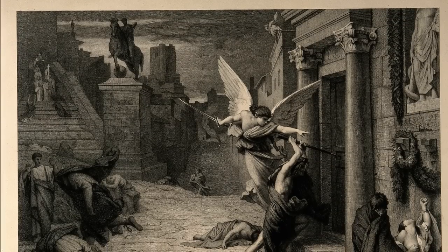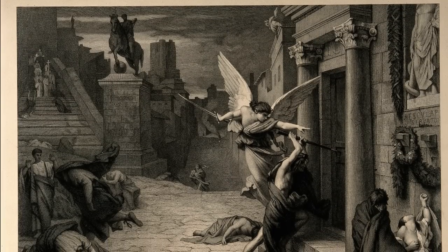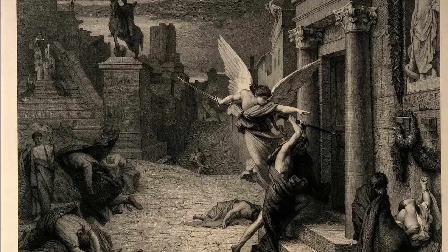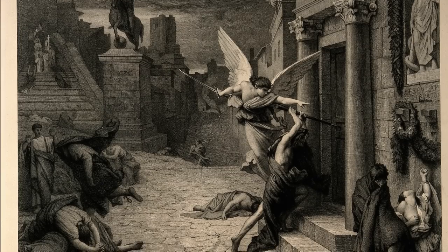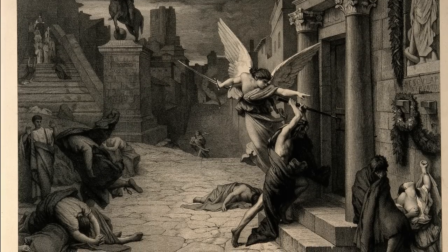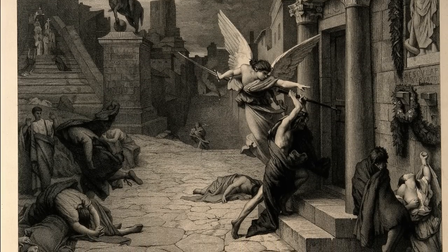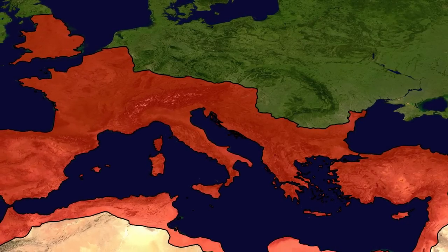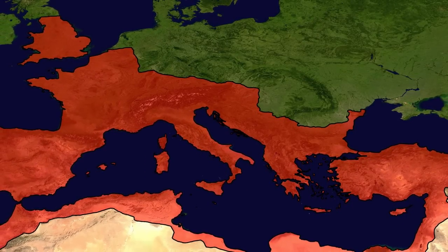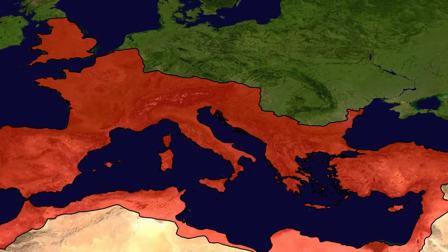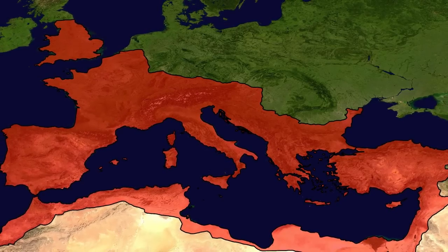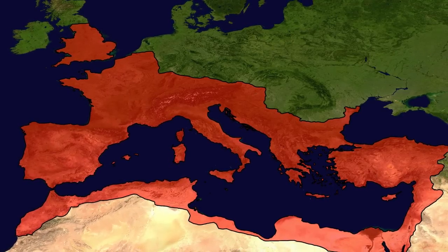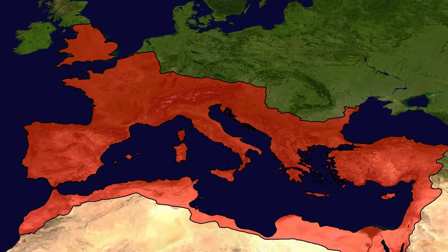The exact consequences of the plagues that hit the Roman world in the 2nd and 3rd century are also difficult to measure. Historians are divided in their opinions about the role these events had in the transformation and, later, fall of Rome. The bottom line is that the Roman world and what surrounded it were significantly changed by the 4th century, and in unluckier circumstances, Rome could have collapsed during the 3rd century crisis.